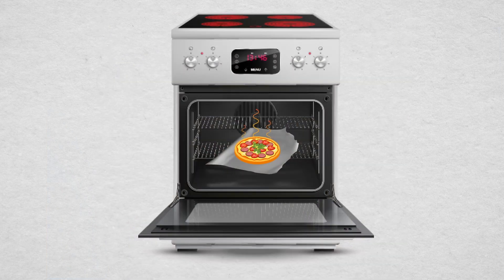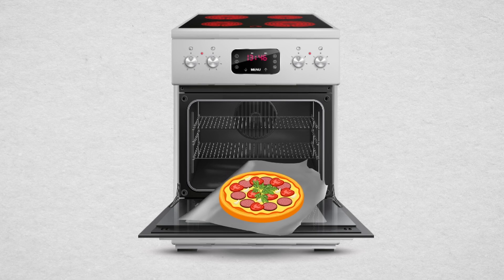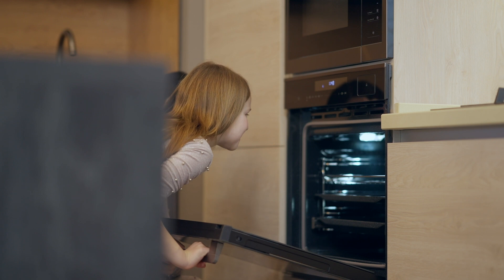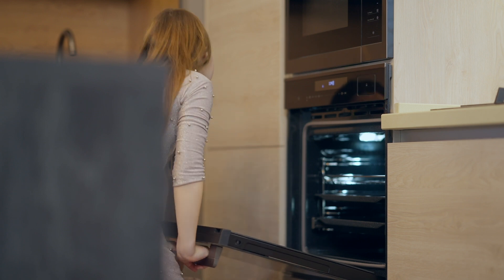Have you ever wondered how you can take a piping hot pizza out of your convection oven using aluminum foil without the foil feeling scalding hot to the touch? It's an interesting conundrum, considering that you wouldn't dare to reach out and touch the inside of the oven itself.